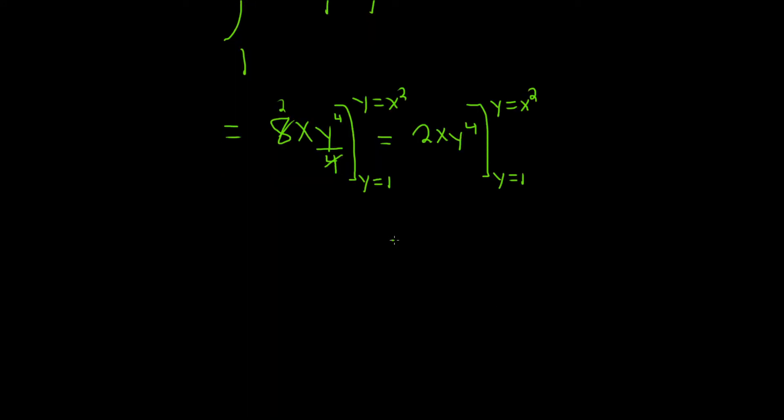Alright, now we plug in the top one first and we're plugging it into the y. So it'll be 2x and then it's y, but y is really x² and that's to the fourth power.